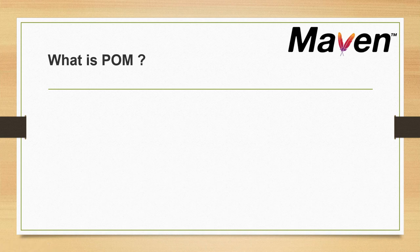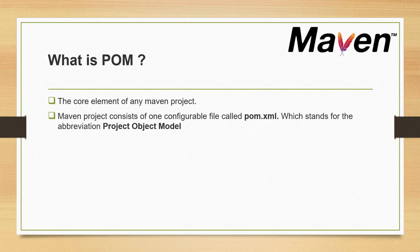Welcome to KKJavaTutorials. In this video tutorial we'll understand what is POM in Maven project. POM is nothing but it's a core element of any Maven project. Maven project consists of one configurable file called pom.xml. It's an XML file which stands for the abbreviation Project Object Model. So POM stands for Project Object Model.